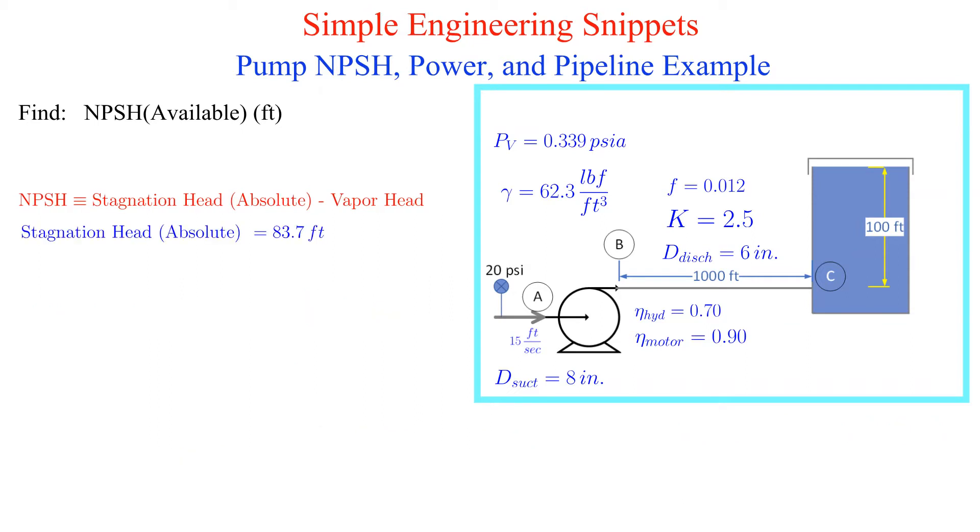Now let's find the vapor head. The vapor pressure is provided in absolute units so this calculation is straightforward. The vapor head is equal to 0.784 feet. Subtracting the vapor pressure head from the absolute stagnation head results in 82.9 feet.